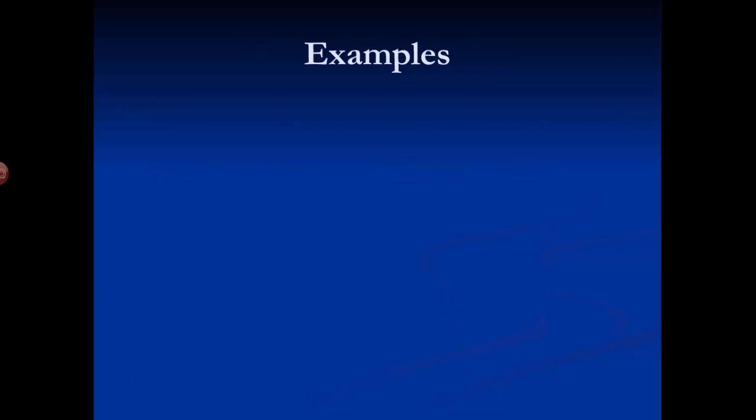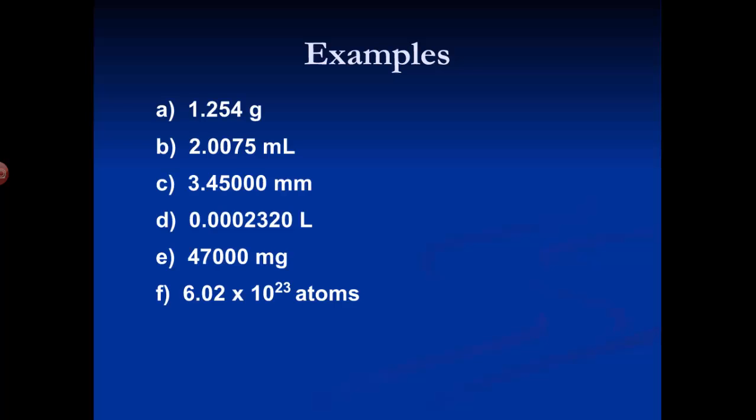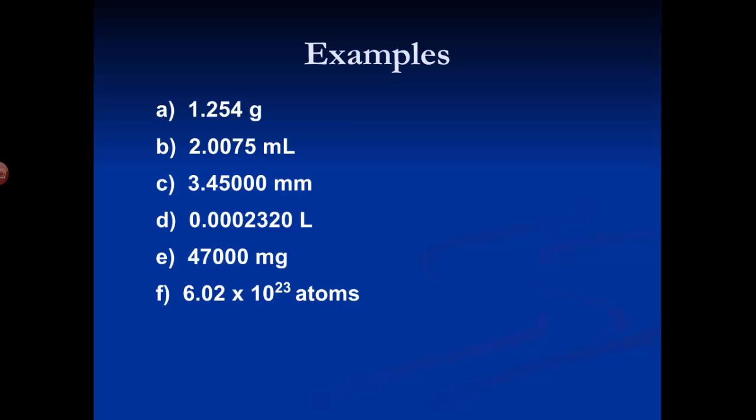Let's do some examples of counting the number of significant figures. Here are some measurements taken in lab — several different kinds, all with units. What I want you to do is stop the video, jot down each of these numbers, and count — according to the rules we've just learned — how many significant figures there are in each measurement. Stop the video and tell me how many sig figs are in each. I'll wait. I said stop the video.